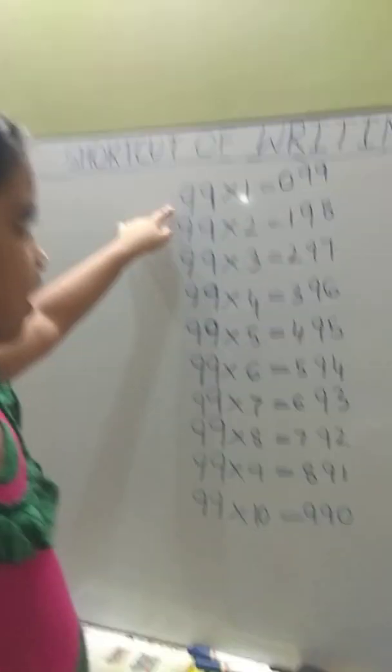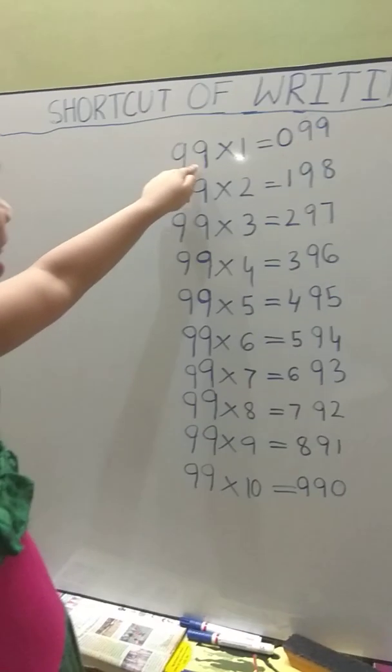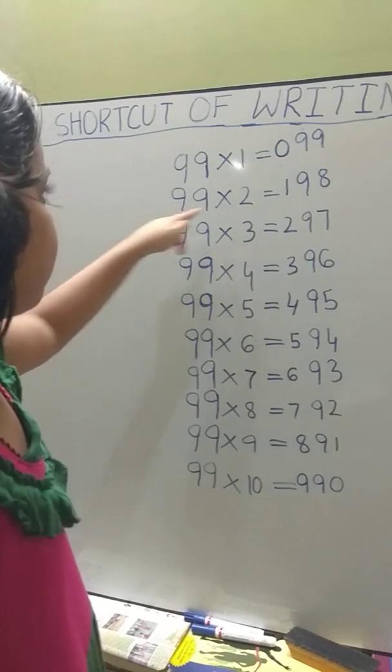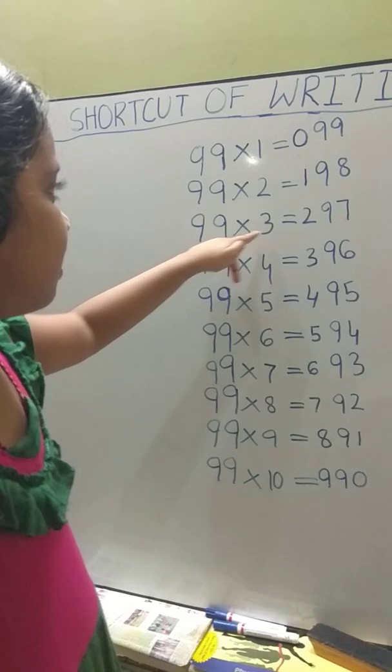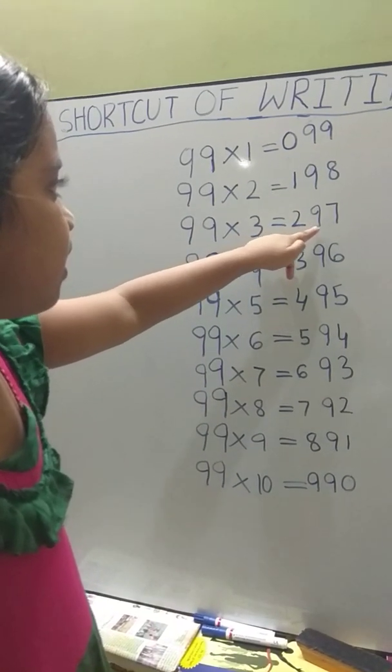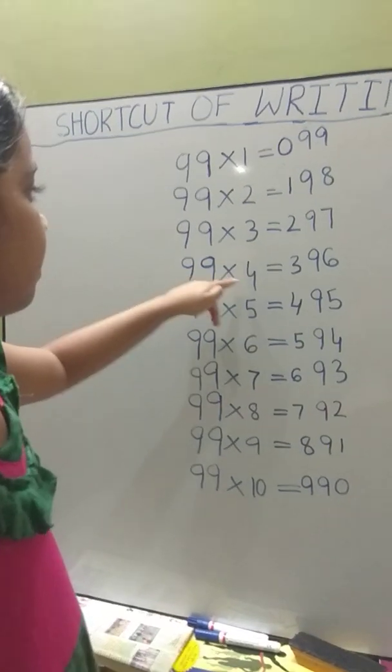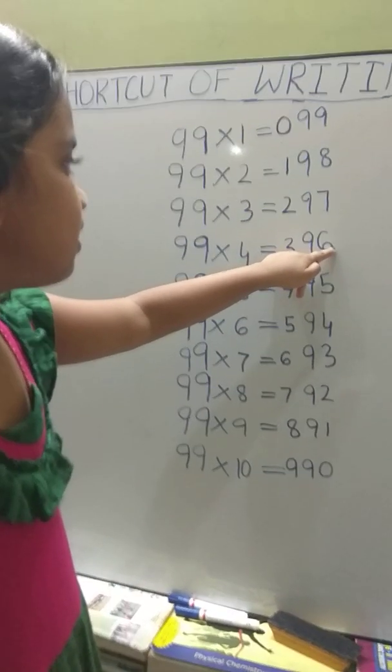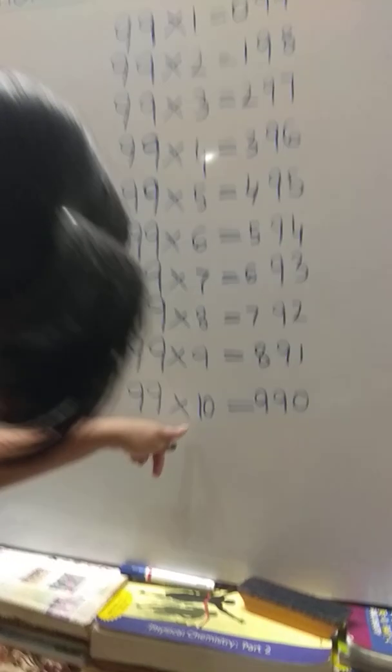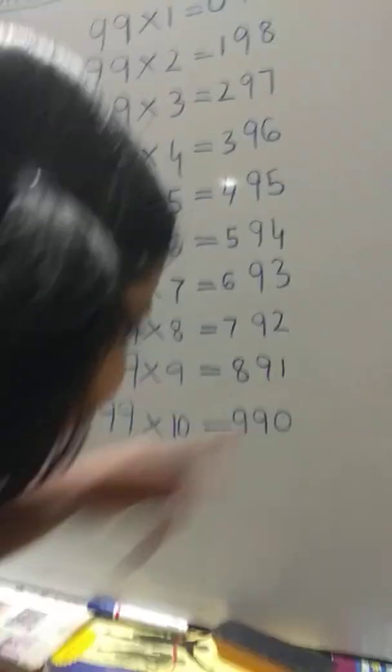Look at the board. 99 times 1 is 99, 99 times 2 is 180, 99 times 3 is 297, 99 times 4 is 396. Like this, 99 times 10 is 990.